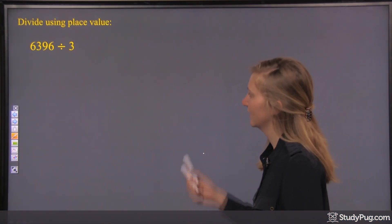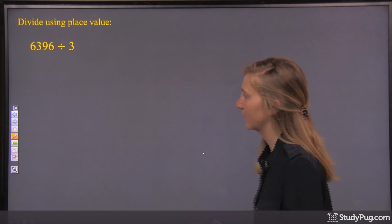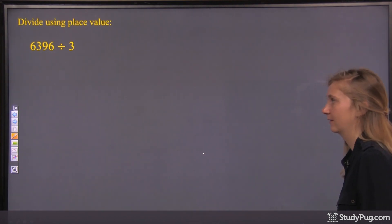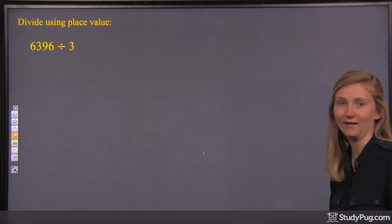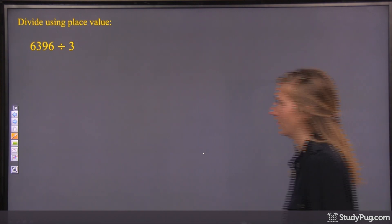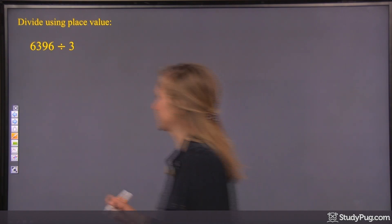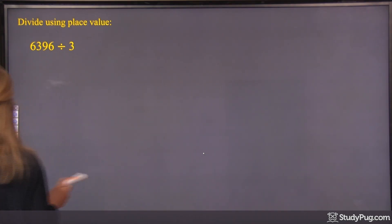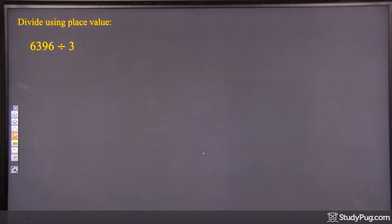Divide using place value: 6,396 divided by 3. Okay, on to the four-digit numbers. That doesn't change anything. Let's just look at 6,396 and break it up into parts that we know how to divide by 3, or that are easy to divide by 3.